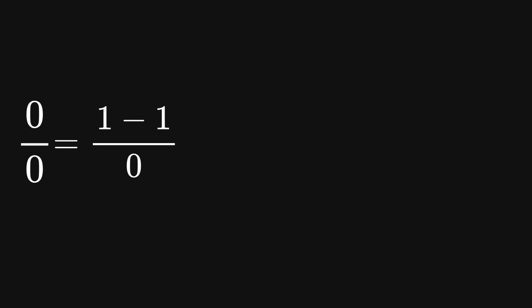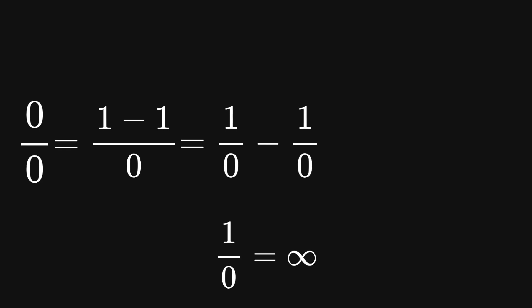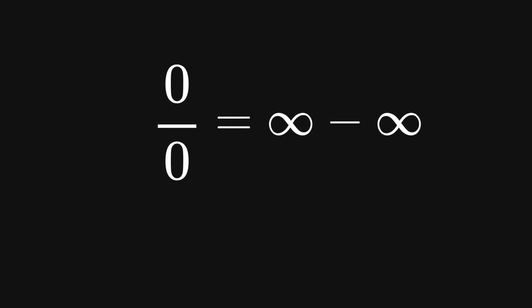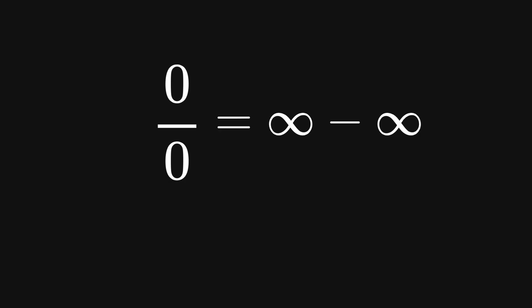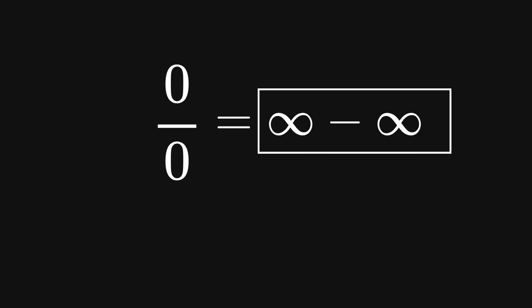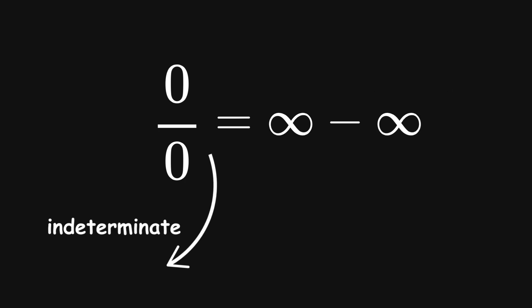Let's work again with the expression 0 over 0. We can rewrite this fraction in a clever way: 0 over 0 is the same as 1 minus 1, all divided by 0. We can split this into two separate fractions: 1 over 0 minus 1 over 0. Since 1 over 0 equals infinity, our expression becomes infinity minus infinity. We started with 0 over 0, which is an indeterminacy, and through algebraic manipulation we've shown that 0 over 0 equals infinity minus infinity — so infinity minus infinity is also a mathematical indeterminacy.